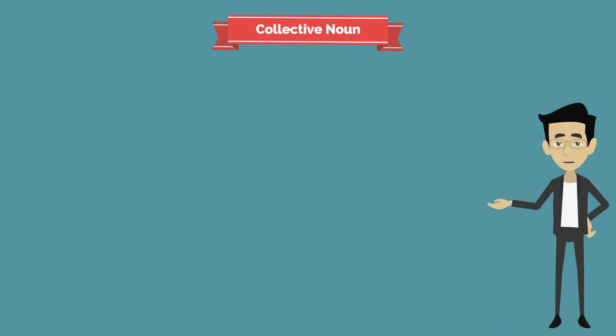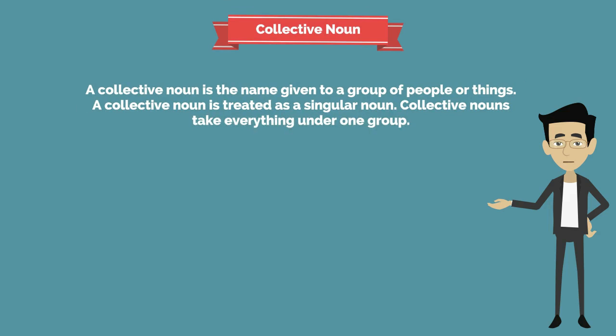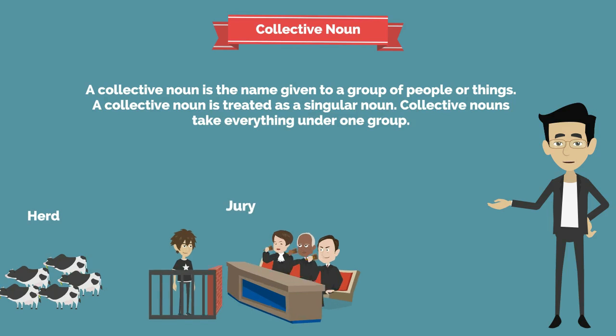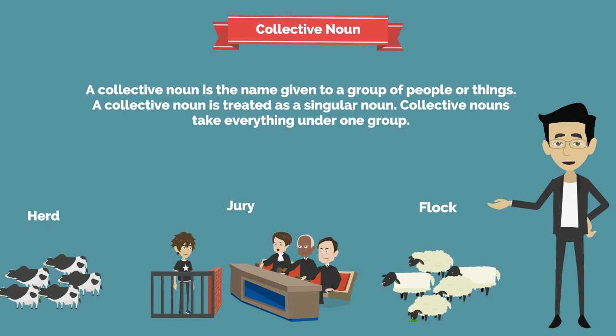The next type is the collective noun. A collective noun is a name given to a group of people or things. A collective noun is treated as a singular noun and takes everything under one group. Examples: constance, herd, jury, flock, and so on.